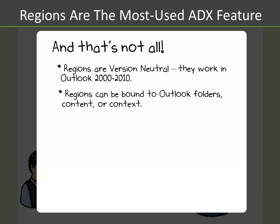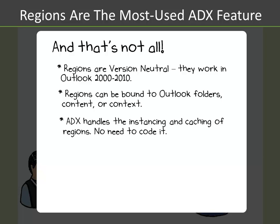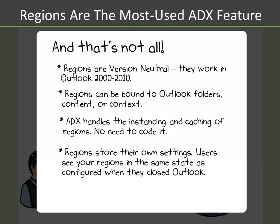Regions can be bound to Outlook folders, their content, or even Outlook contexts. Addin Express handles the instancing and caching of your regions — you don't have to code it. And regions store their own settings.